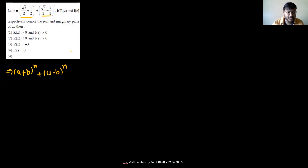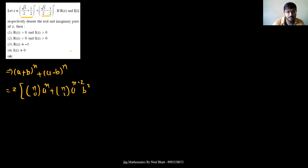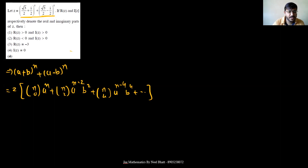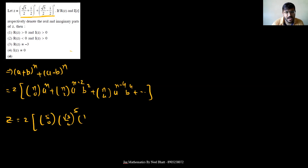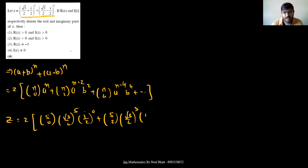We know that (a + b)^n + (a − b)^n equals 2 times all even-r terms (odd r terms cancel). So we can write: 2[⁵C₀·a^5·b^0 + ⁵C₂·a^3·b^2 + ⁵C₄·a^1·b^4], where a = √3/2 and b = i/2, raised to the appropriate powers.